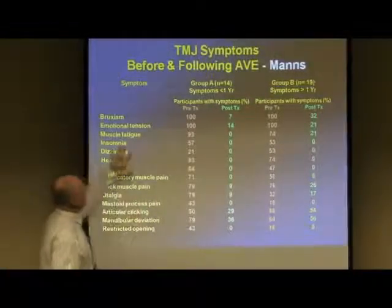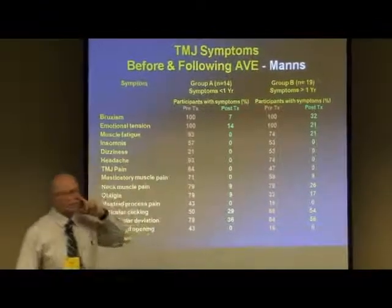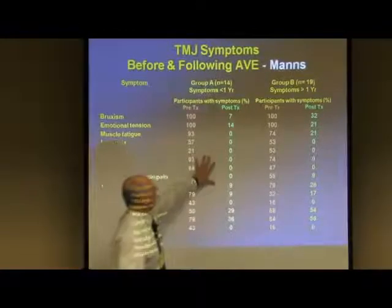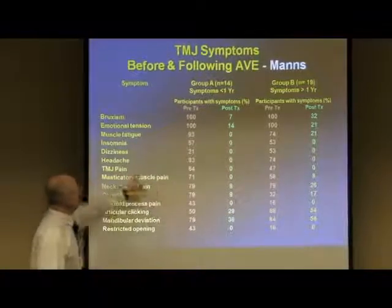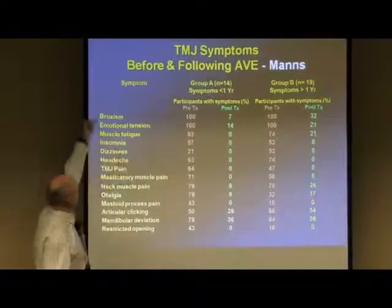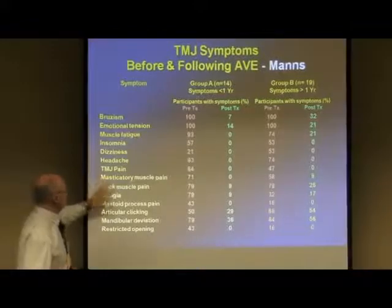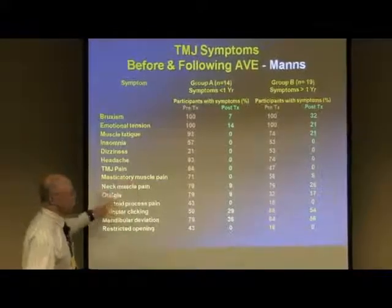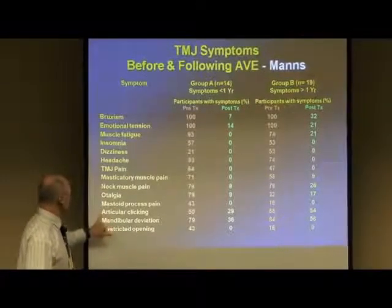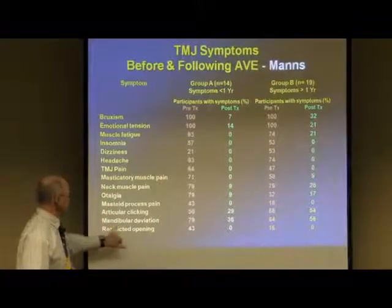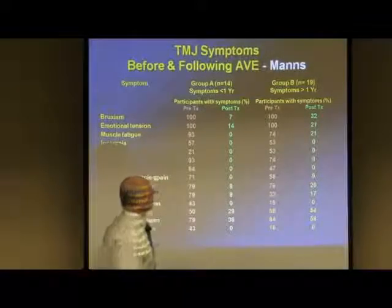Here's a study done on TMJ — temporomandibular joint dysfunction with pain in the joint and clicking. This group had less than one year of symptoms; this group had more than one year. They were run on entrainment in the alpha range. You can see for bruxism, emotional tension, muscle fatigue, insomnia, dizziness, headache, TMJ pain, masticatory muscle pain, jaw-closing muscles, neck muscle pain, otalgia, mastoid process pain, articular clicking, mandibular deviation, and restricted opening — look at how quickly all of that went down.